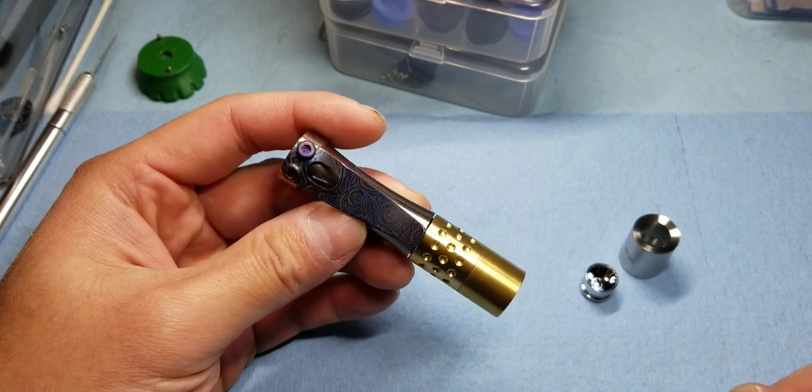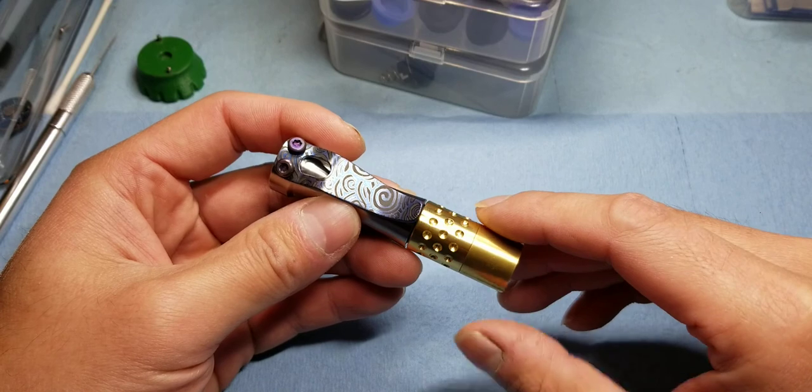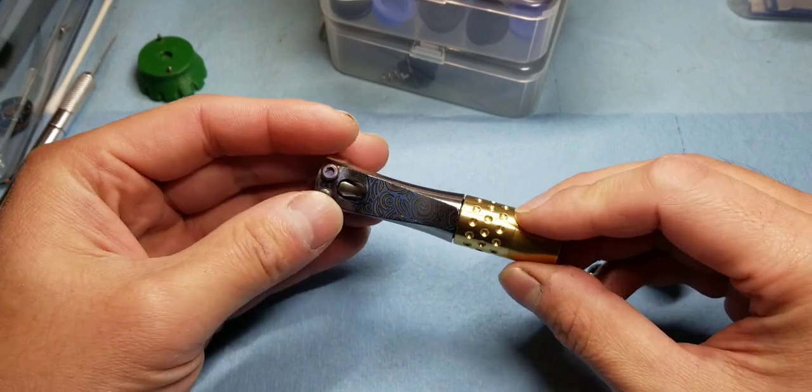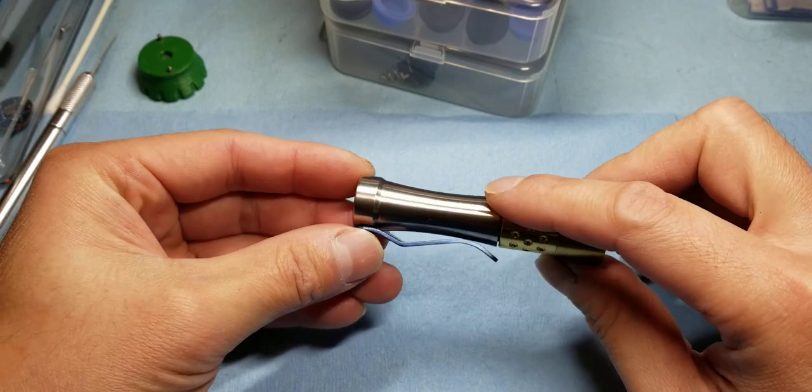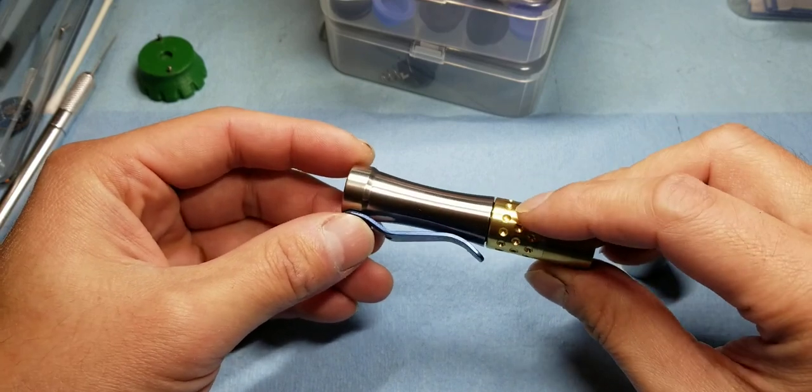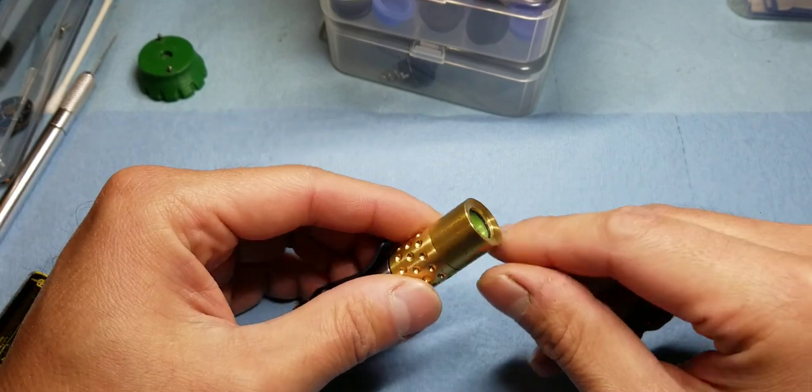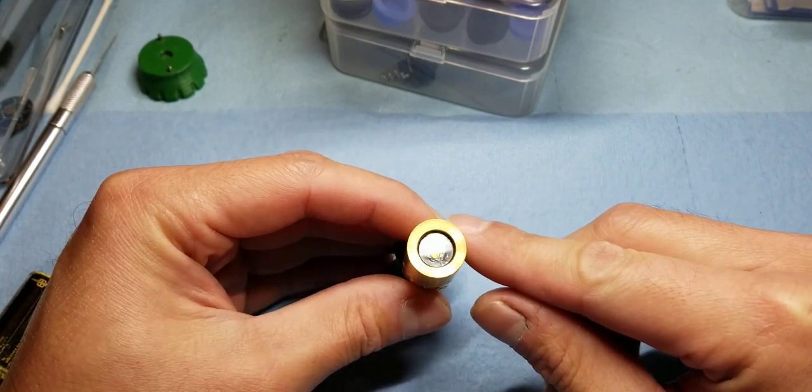This is a video on how to swap the bezels on a Hoku flashlight. This is my personal light: a titanium short clip body, dimpled brass engine, and I run a short mule bezel.